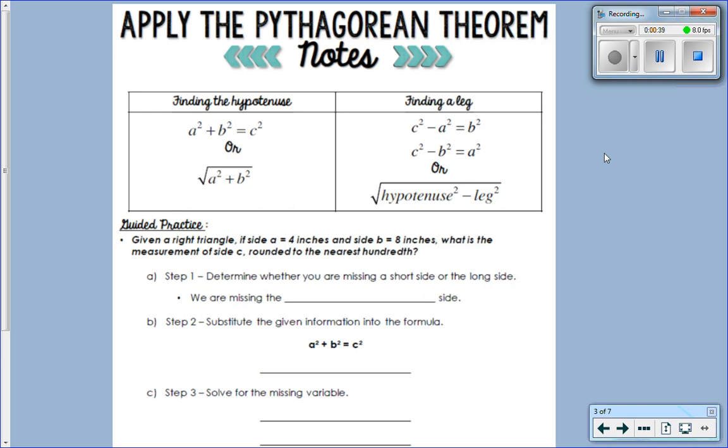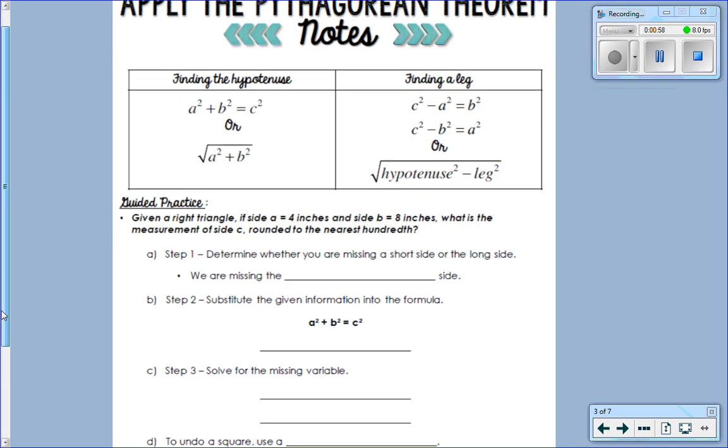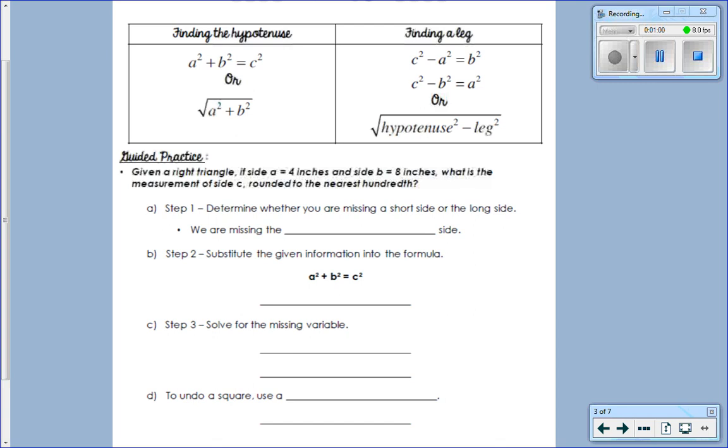Alright, so let's get started. Let's actually find it on the reference material. Do y'all see the Pythagorean Theorem? Where it says additional resources, the very first one. Given a right triangle, if side A equals 4 inches and side B equals 8 inches, what is the measurement of side C rounded to the nearest hundredth? If it doesn't give us a picture, what do we do?